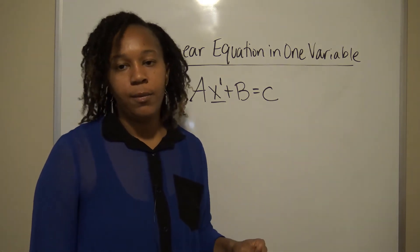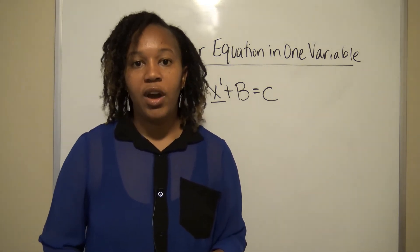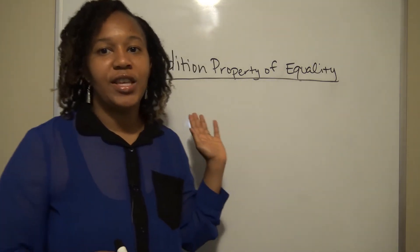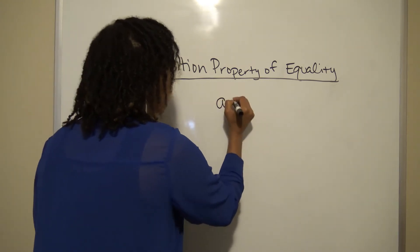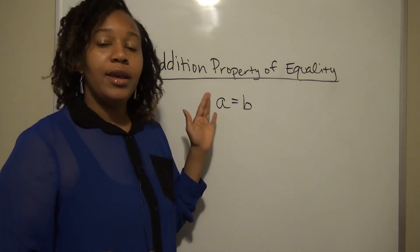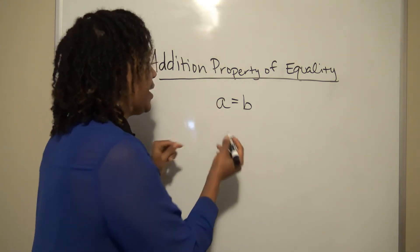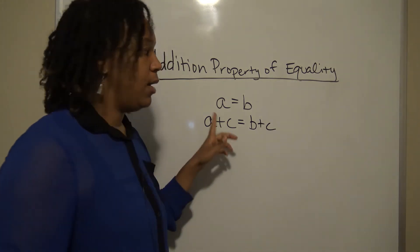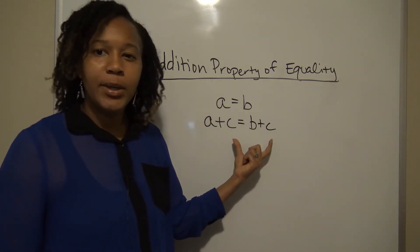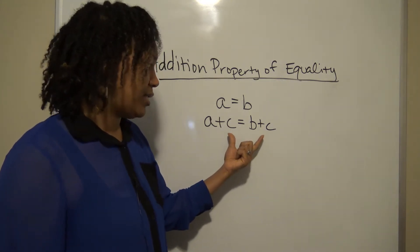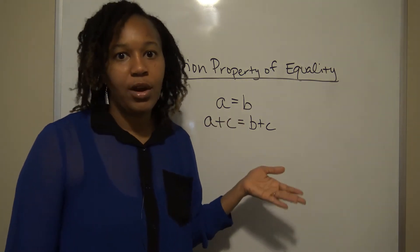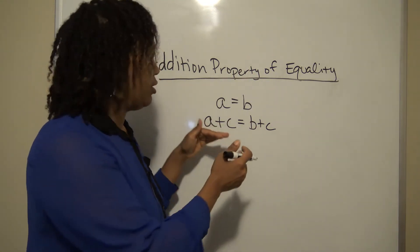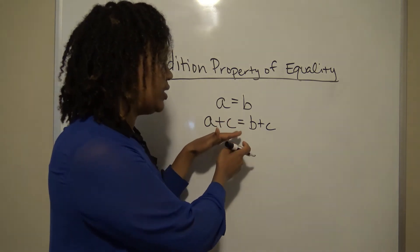To solve linear equations in one variable, you need to know about two principles. The first is the addition property of equality. It states that if you have two things equal to each other — say a = b — you can add any number to a and the statement is still equivalent, as long as you add that same number to b as well. This is the concept you've probably heard before: whatever you do to one side, you do to the other side.